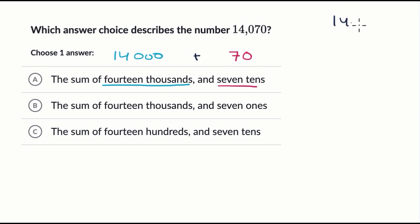And I could do this here if I wanna line up the place values, 14,000 and 70. Well, I have no ones, I have seven tens, I have no hundreds, I have four thousands, and I have one ten thousand.